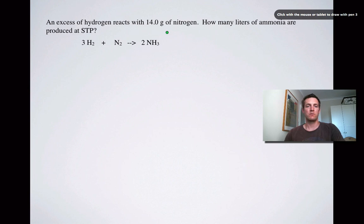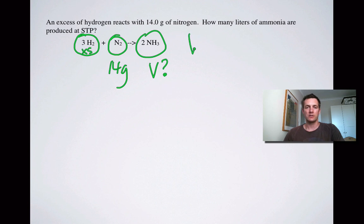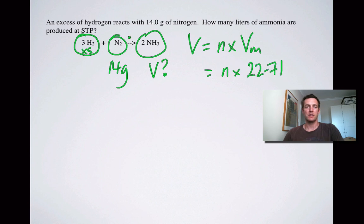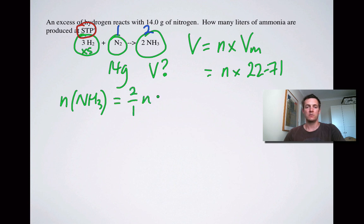Moving on: an excess of hydrogen reacts with 14 grams of nitrogen. How many litres of ammonia are produced at STP? We identify hydrogen as in excess, nitrogen as the limiting reagent at 14 grams, and ammonia as what we're finding. The volume equals the number of moles times the molar volume, which is 22.71 litres at STP. The mole ratio of N₂ to NH₃ is 1 to 2, so the number of moles of ammonia is 2 over 1 times the number of moles of nitrogen.